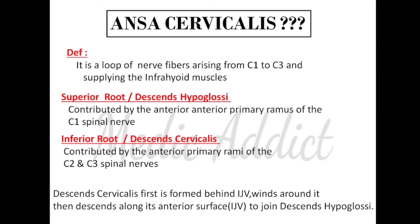One important point is that the descens cervicalis, the inferior root, is formed behind the internal jugular vein. It winds around it and then descends along its anterior surface to join the descens hypoglossi. So to summarize: the inferior root is formed behind the IJV, winds around the IJV, and then descends to its anterior surface where it joins the descens hypoglossi coming down from the C1 root.